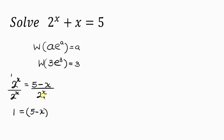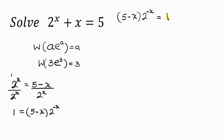Notice that 2 to the x is in the denominator. When we bring it up to multiply (5 minus x), the power becomes negative — so 2 to the negative x appears. This negative sign indicates 2 to the x was in the denominator. Rewriting, we have: (5 minus x) times 2 to the negative x equal to 1. It's the same expression, just with positions flipped.